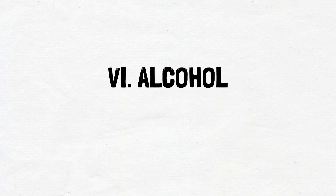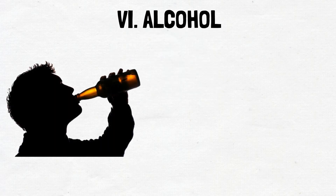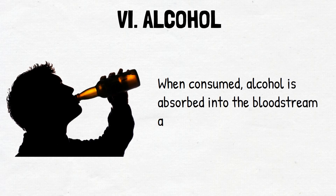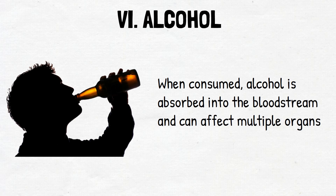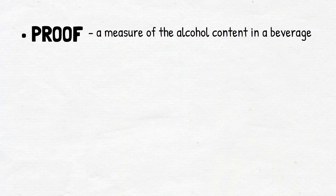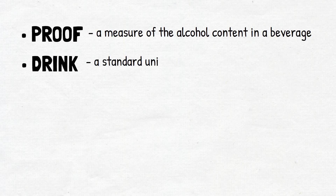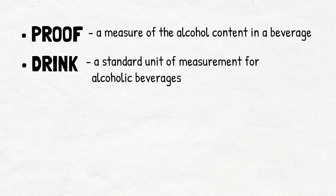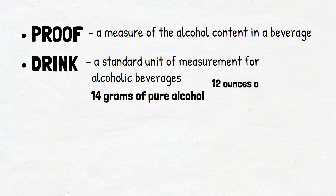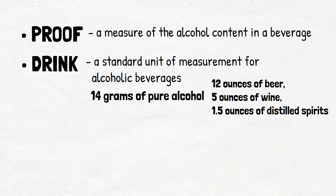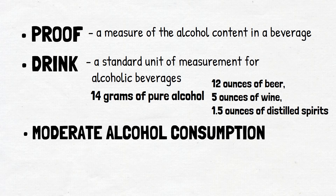Alcohol is a volatile liquid produced by the fermentation of sugars. When consumed, alcohol is absorbed into the bloodstream and can affect multiple organs. Proof is a measure of the alcohol content in a beverage, defined as twice the percentage of alcohol by volume. In the United States, a standard drink contains about 14 grams of pure alcohol, equivalent to about 12 ounces of beer, 5 ounces of wine, or 1.5 ounces of distilled spirits.